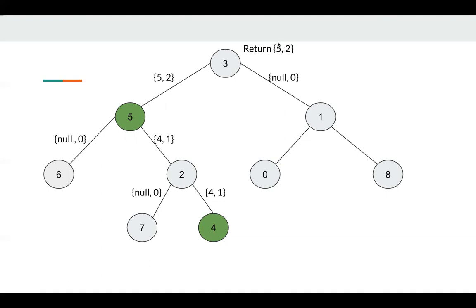The biggest difference from the LeetCode 236 approach is that even when we reach a green node (p or q), we don't return immediately. Previously we skipped recursing into the left and right children. But for this problem, there might be another p or q in the left or right subtree, so we need to get the count. We always make two recursive calls — left part and right part.